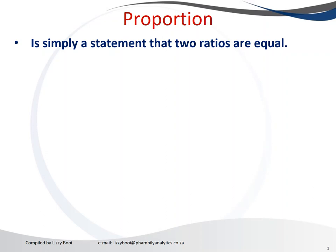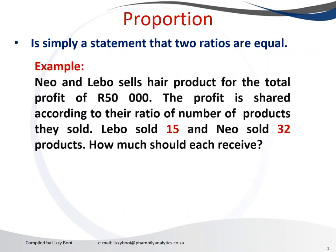In a sense, when we use proportion, we try to make things equal, or we try to make things fair. Let's look at this example: Neu and Labo sell hair products for a total profit of 50,000 rand. The profit is shared according to their ratio of number of products they sold. Labo sold 15 and Neu sold 32 products.